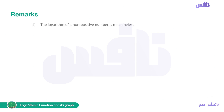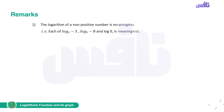Important remarks: First, the logarithm of a non-positive number is meaningless. For example, log base 2 of negative 3 is meaningless — the argument inside the log cannot belong to the negative reals. Log base 5 of negative 8 and log of zero are also meaningless. Whatever is inside the log must belong to the positive reals.